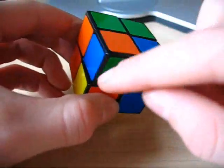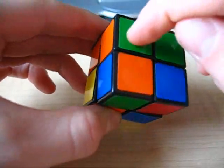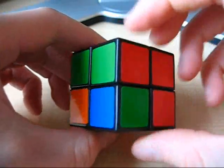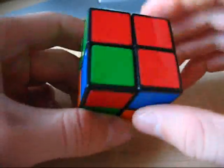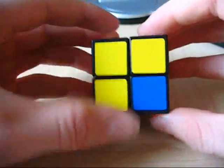And you look, are these corners in place? Orange green, orange green. Green red, green red. So we know that they're all in place.